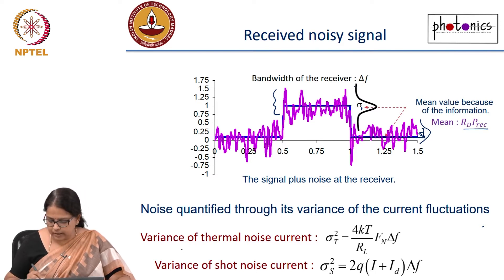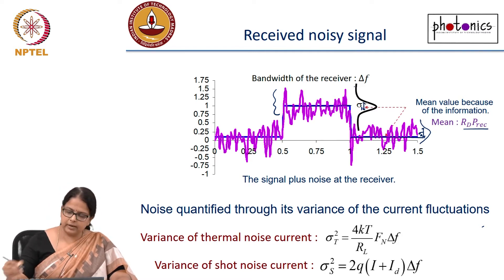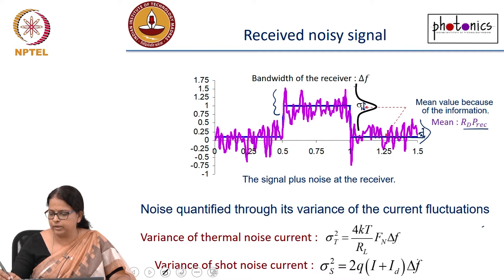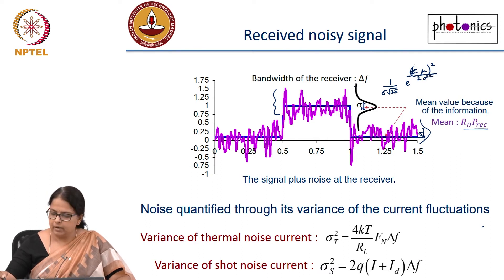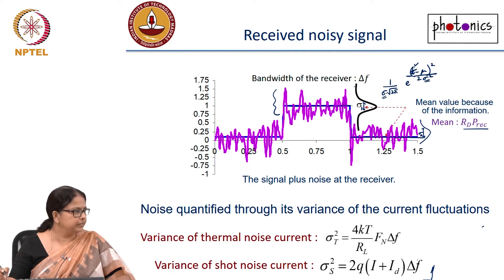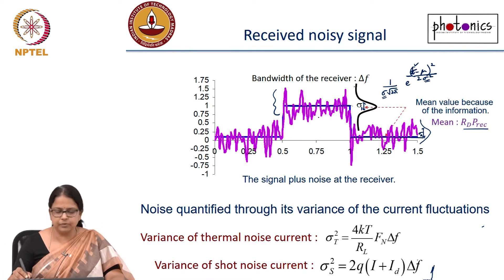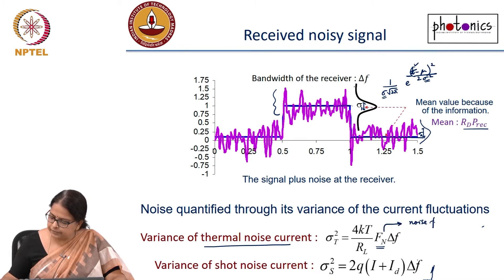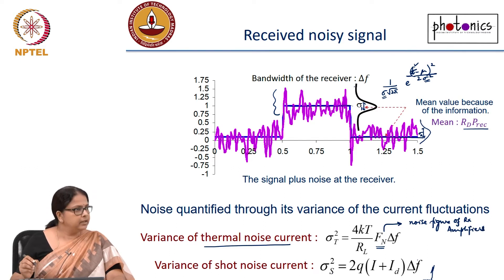You can quantify the thermal noise and shot noise by the spread of your histogram. Since it is a Gaussian, the distribution is (1/σ√2π) · exp[−(t−μ)²/2σ²], where t is your variable and μ is your average value corresponding to 1 and 0 — it is going to be different. The variance of the noise current due to thermal noise is 4kT/R times the noise figure Fn, where Fn is the noise figure of the receiver amplifiers. If you have a chain of amplifiers in the receiver, the noise figure of that is Fn.